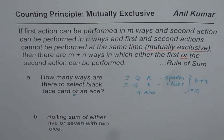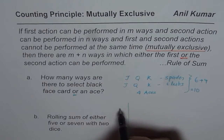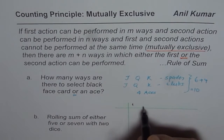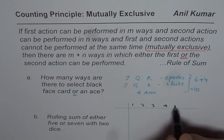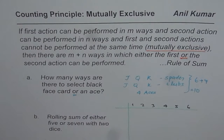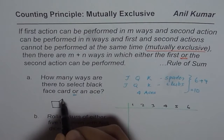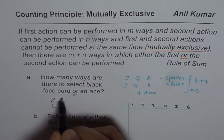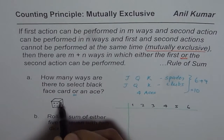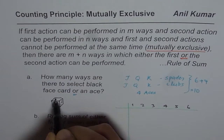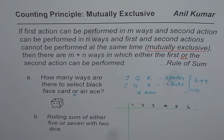Now the second one is a more difficult question: rolling a sum of either five or seven with two dice. When you roll one die, you can get one, two, three, four, five, or six — it is a six-faced die. Let me draw one here to make it absolutely clear. So this is a six-faced die.